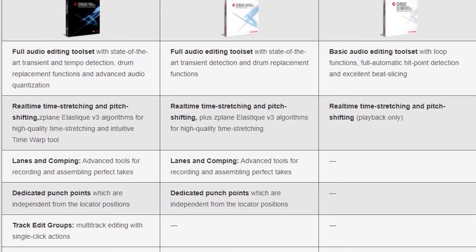In Elements you've got a basic audio editing toolset with real-time stretching and pitch shifting in playback only. Artist is a bit more complex, adding lanes and comping and dedicated punching points. With Cubase Pro you also get track edit groups and VariAudio. The different time-stretching algorithms in Cubase Pro are really useful because the right algorithm depends on your source material, and you also get the intuitive time warp tool. But this doesn't stop you being creative in a DAW environment at the Elements level.